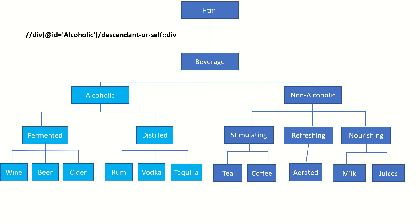There is one more variant: 'descendant-or-self', which includes the current tag while highlighting all descendant elements. When you use only 'descendant' you get only descendants, but 'descendant-or-self' includes the current tag as well.